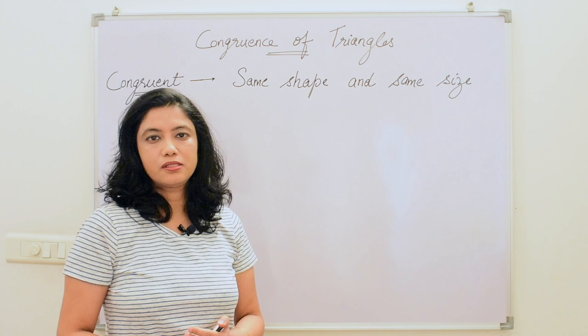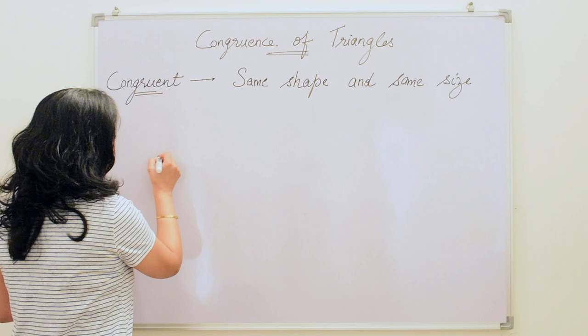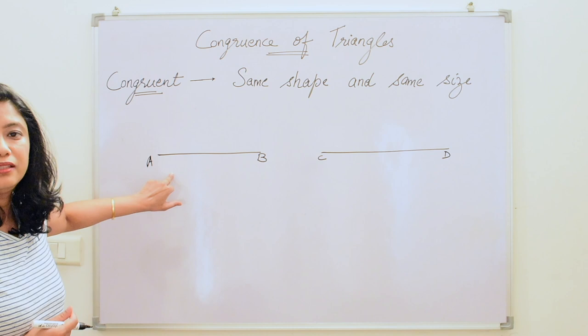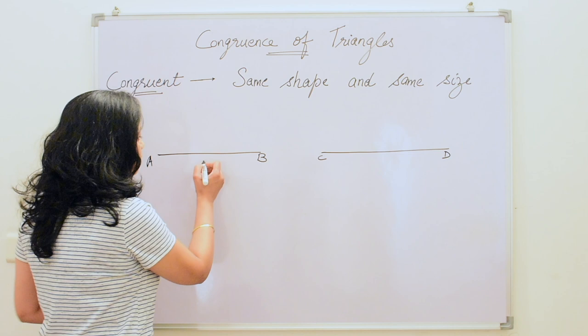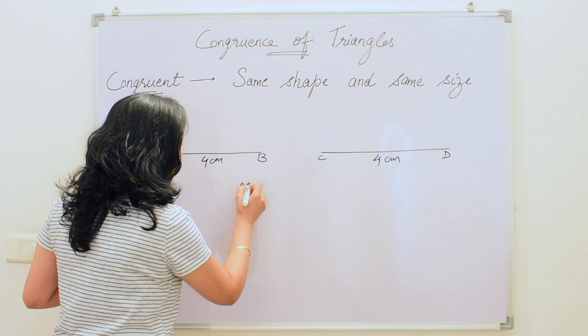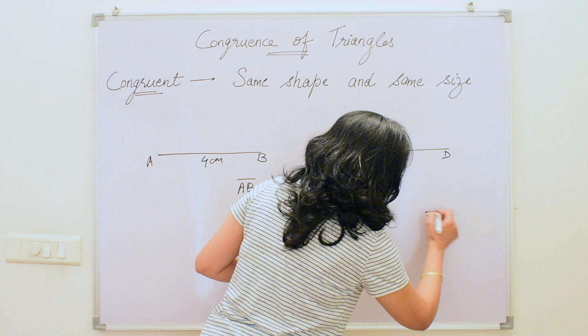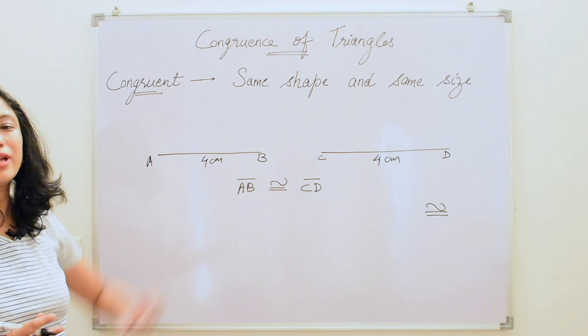Now let us see the congruency of line segments. These are two line segments AB and CD. If they have the same length — if the measure of the length is same — then they are said to be congruent. For example, if this is 4 centimeters and this is also 4 centimeters, then we say line segment AB is congruent to line segment CD. This equals sign with a wave over it is the sign of congruency.